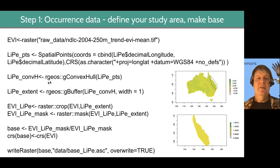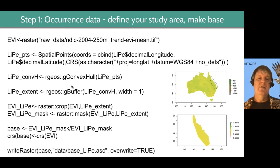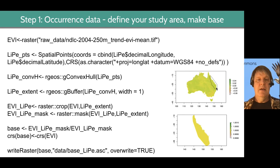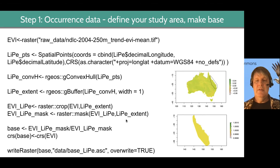These two lines of code do that using the rgeos package. Any time you see something in front of two colons, that's the package, the function within the package, and the object it's acting on. We're acting on the spatial points layer. Then if we crop this layer — everything outside of this in Australia we're not interested in — and we mask it as well. If you just crop, you'll get areas beyond your polygon, so you have to mask it to get just the polygon area.